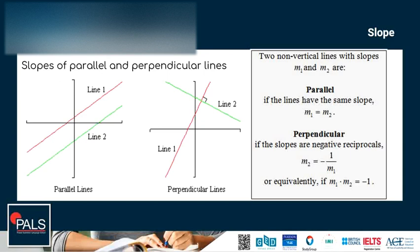The second condition is for perpendicular lines. Perpendicular lines are lines that intersect or cross each other at a 90-degree angle. The slopes of two perpendicular lines are negative reciprocals of each other. In other words, if you multiply the slopes of the two lines you will get negative one, or if the two slopes are negative reciprocals, then the two lines must be perpendicular to each other.